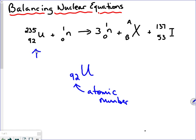So that's not variable — that has to be 92. If it's any other number, then it's not uranium. For example, if it were 93, it would be neptunium, not uranium. I'm just getting that off the periodic table. So the atomic number is equal to the number of protons, and the number of protons determines the identity of the element and determines what symbol we use.